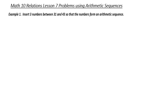Relations, Lesson 7: Problems Using Arithmetic Sequences. Example number one: insert three numbers between 31 and 43 so that the numbers form an arithmetic sequence.